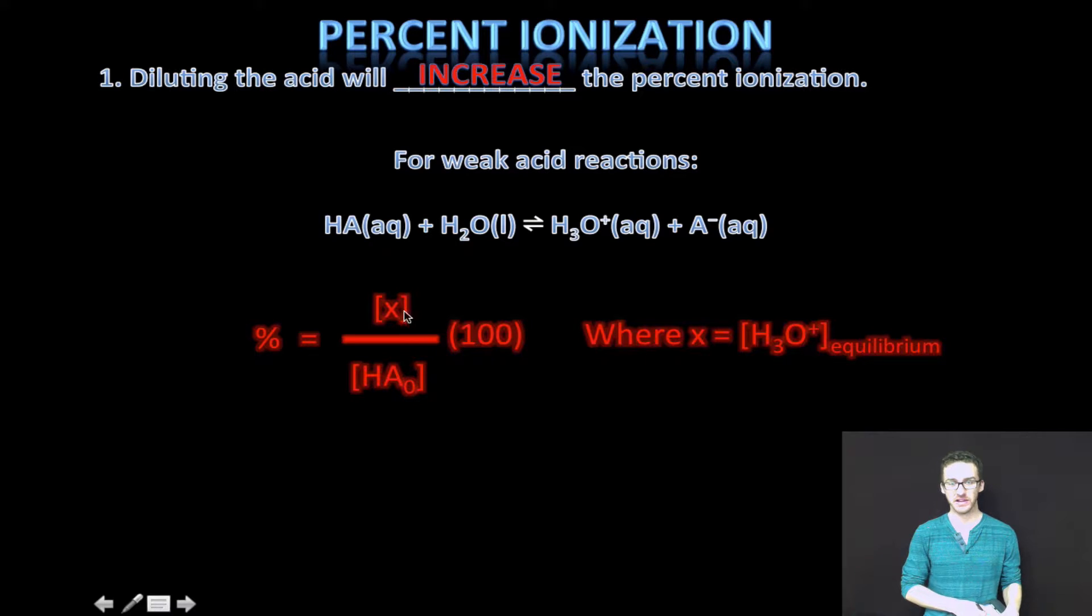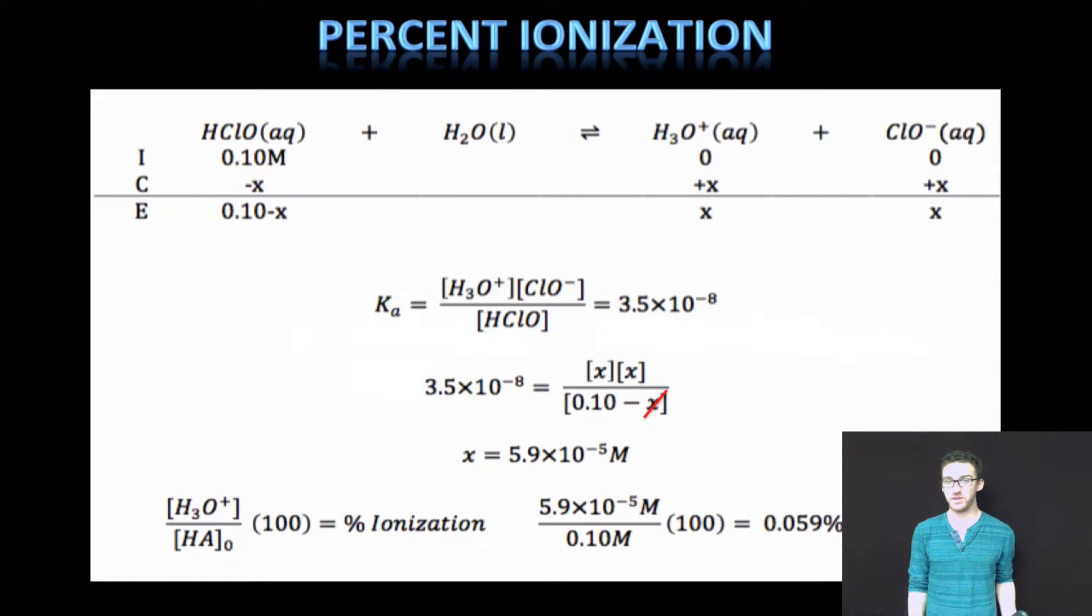Now there will be a change in the hydronium ion concentration to keep Ka constant for any acid. This will decrease as well, but not as much relative to the decrease in the initial acid concentration. I think it's best to clarify this with an example.